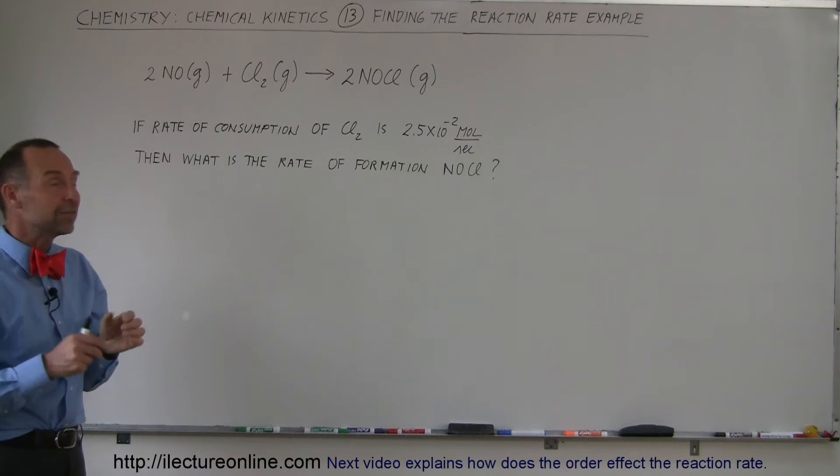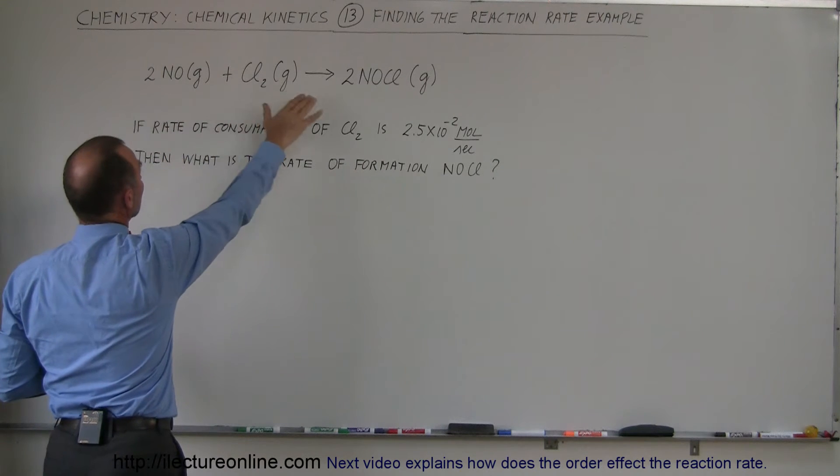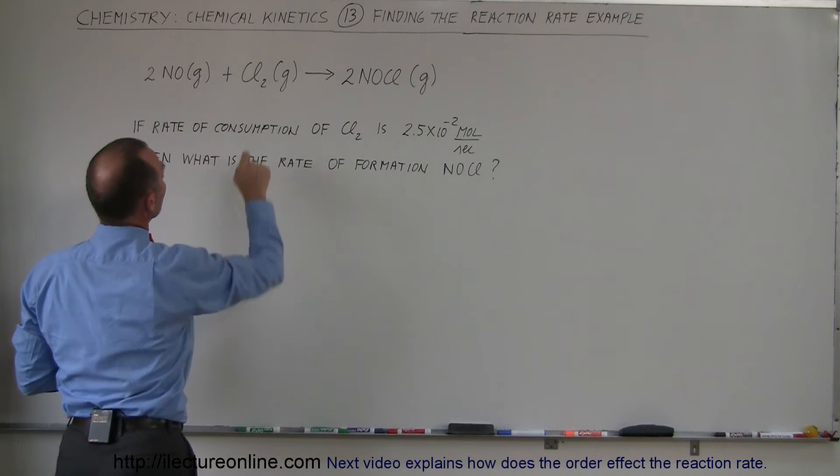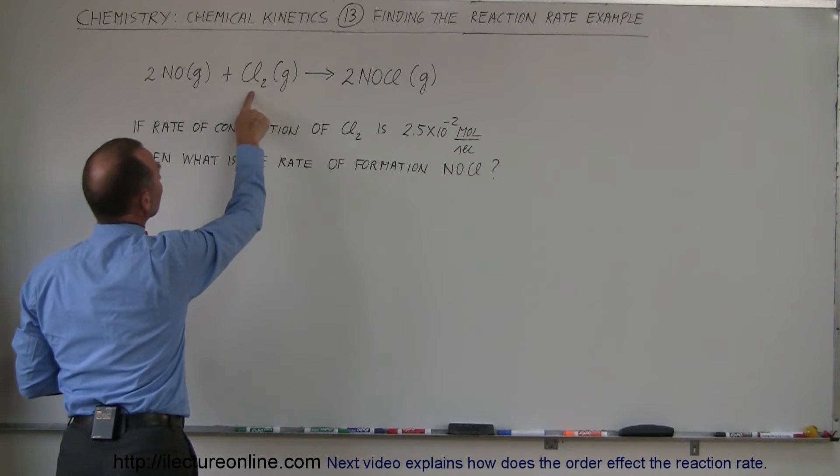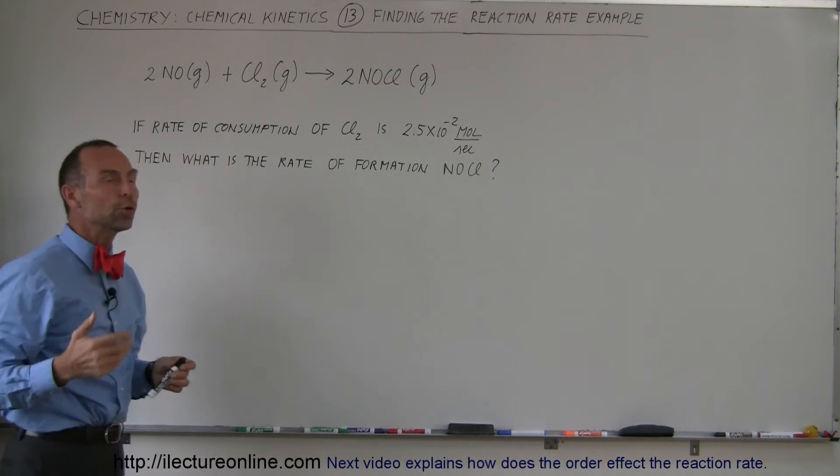Well in this case, the coefficients in front do matter because if this was in molar quantities we need 2 moles of nitrogen oxide gas and 1 mole of chlorine gas to form 2 moles of nitrosyl chloride. So it's a 2 to 1 ratio.